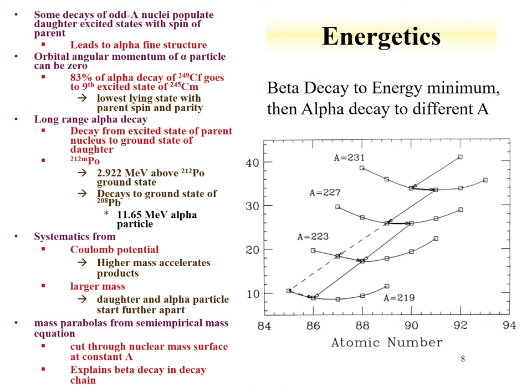There are some systematics that can be observed from alpha decay. The Coulomb potential has a way of accelerating the higher-mass products out of the nucleus. With a larger mass — larger A's that decay — the daughter and alpha particle can start further apart within the nucleus. So that's another reason alpha decay occurs preferentially for higher-A nuclei.